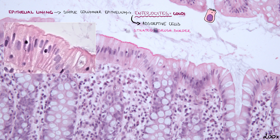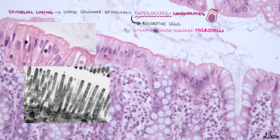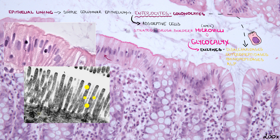We may also call them colonocytes in this segment of the gastrointestinal tract. There are microvilli on their apex, which are arranged in a layer and are covered by glycocalyx. Glycocalyx contains enzymes such as disaccharidases, enteropeptidases, aminopeptidases, and alkaline phosphatases. These are products of colonocytes, which, after translation, are integrated into the membrane as integral membrane proteins.